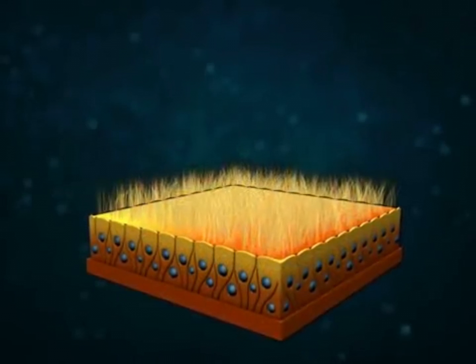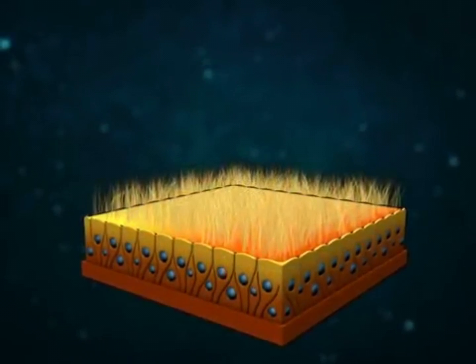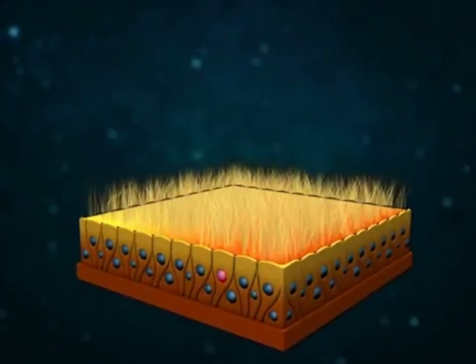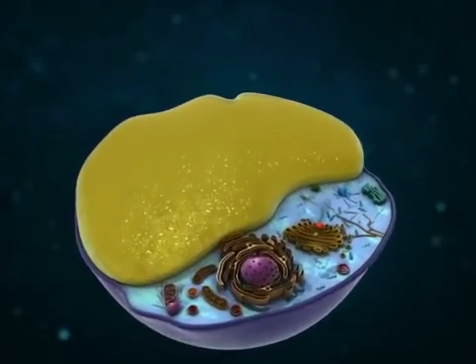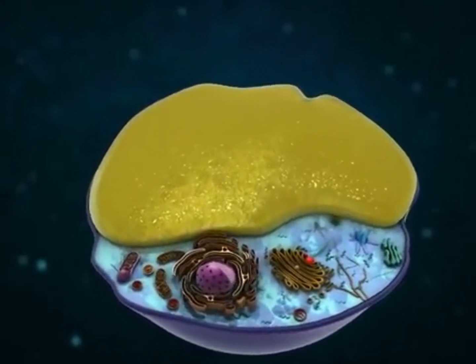In certain cells, such as glandular cells, the nucleus remains located in the basal portion of the cell. The nucleus is peripheral in fat-storing cells or adipocytes.